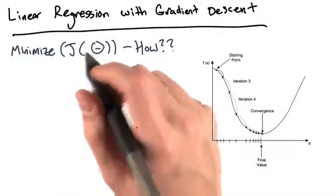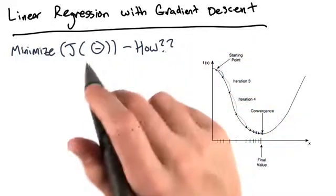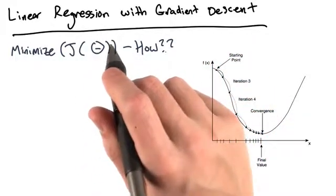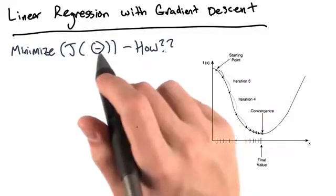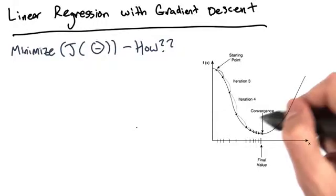All right, so how do we find the correct values of theta to minimize our cost function J of theta? We're going to use a search algorithm that takes some initial guess for theta and iteratively changes theta such that J of theta keeps on getting smaller and smaller until it converges to some minimum value.